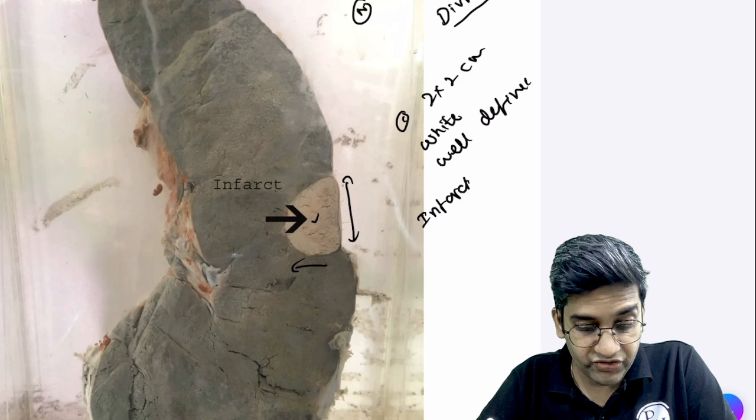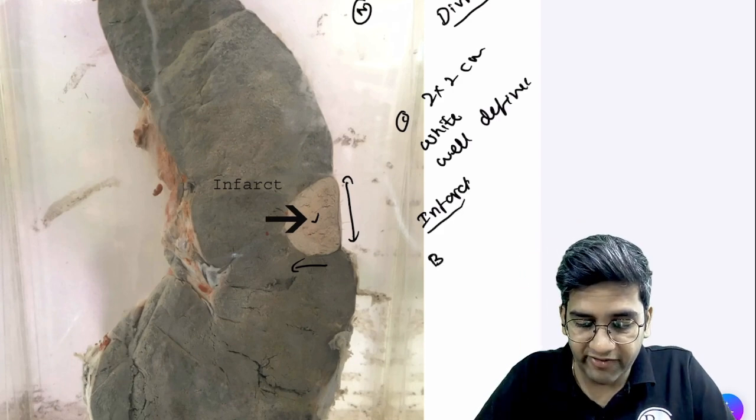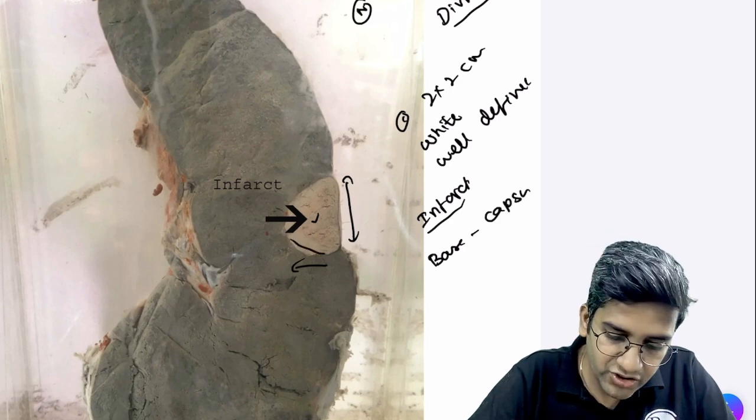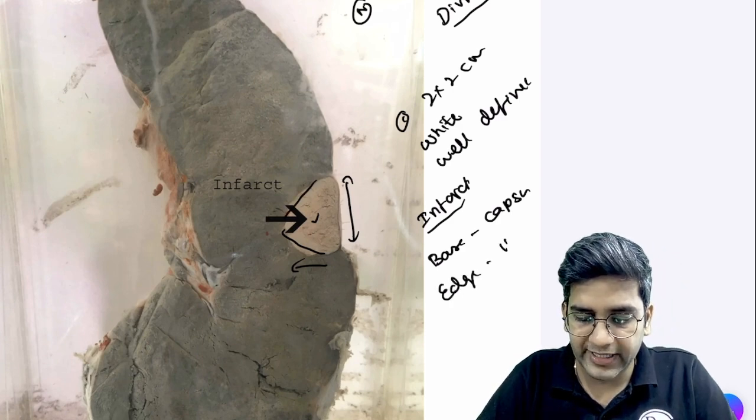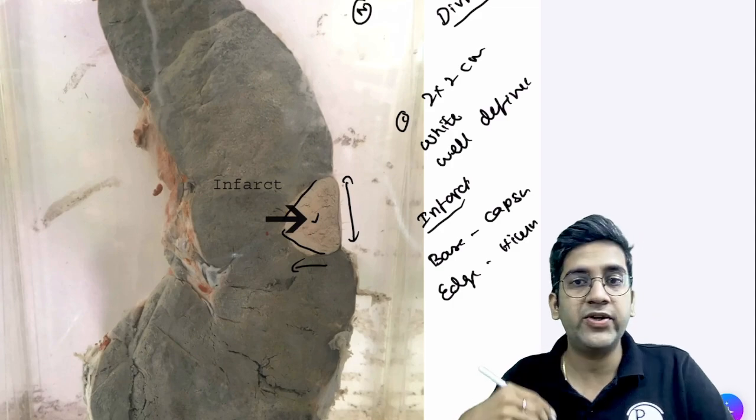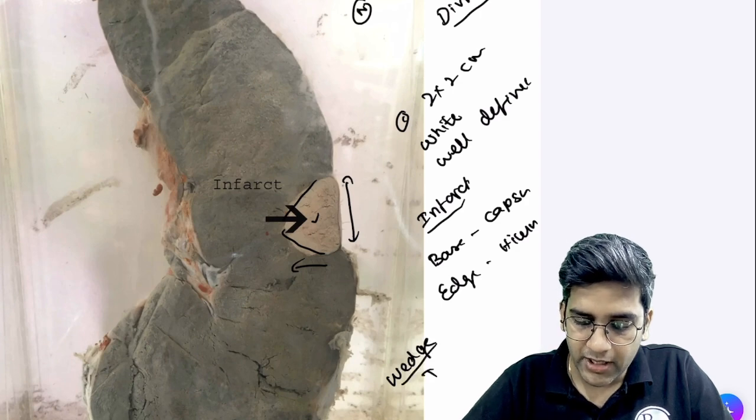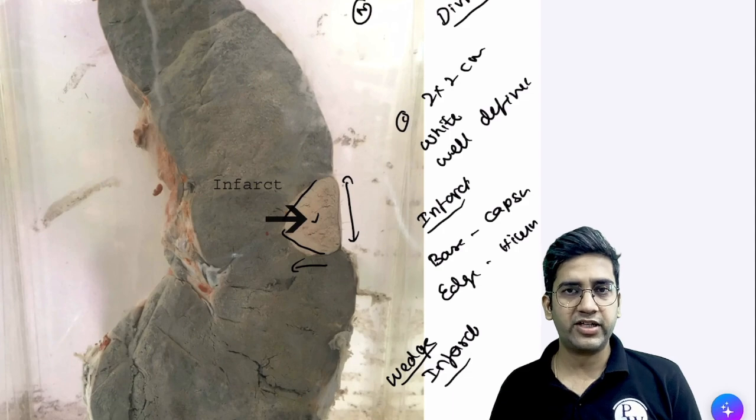I would think of an infarct of spleen. Adding to that point, the base of the infarct is towards the capsule and the edges of the infarct is towards the hilum. Edges towards the hilum—this kind is going to convey to the examiner I am talking about a wedge infarct of spleen. So once you tell this, the examiner knows I'm talking about a wedge infarct of spleen, then the questions will start flowing.